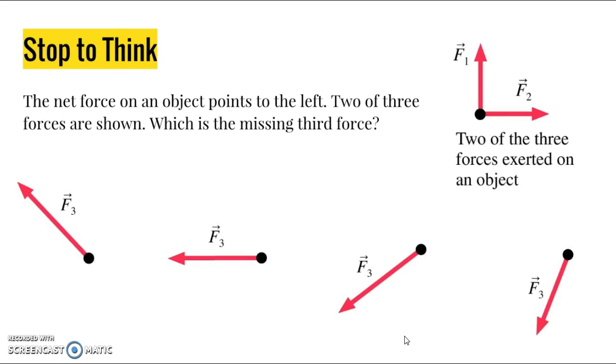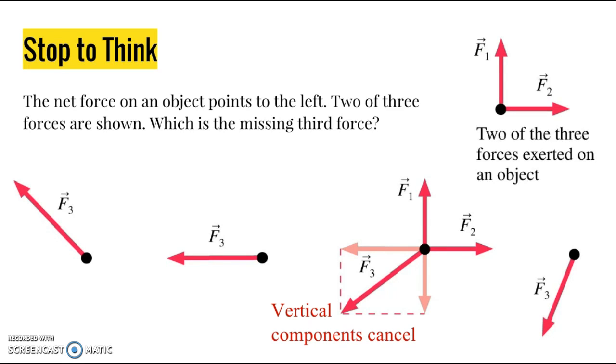One last thing. We have a situation here where the net force on the object points to the left. We know when we add up all our forces, it's going to result in a vector pointing straight to the left. Two of the three forces are shown. We're missing one of them. We want to choose which of these three is the missing third force. The answer is the third of these vectors. The reason why is we know our resultant vector is going to be pointing straight to the left. In that case, we know that our vertical components have to cancel out. Because we have a force pointing straight up, we don't want our resultant vector to be having any upward part at all. We know we're going to have to have a piece of vector pointing straight down. Force three here provides a length in the vertical direction that's the same as the length of force one, so the same magnitude.